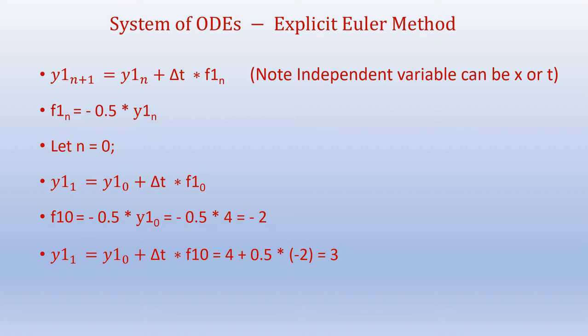And f1_0 = -0.5 × y1_0 = -0.5 × 4 = -2. Therefore y1_1 = 4 + 0.5 × (-2) = 3.